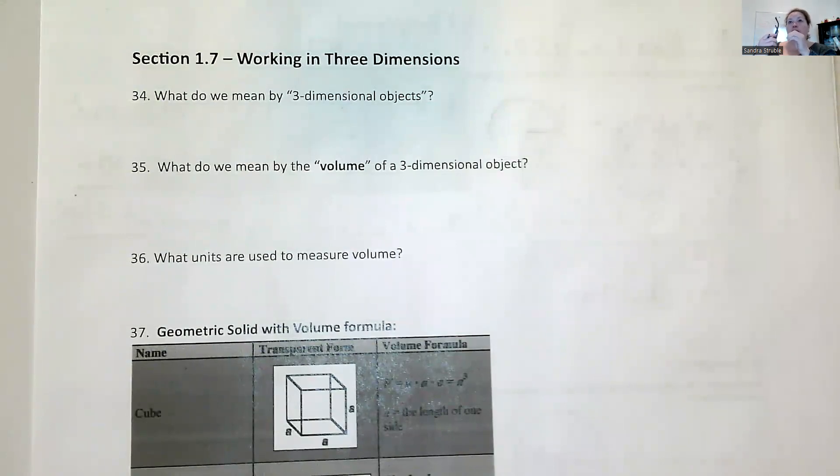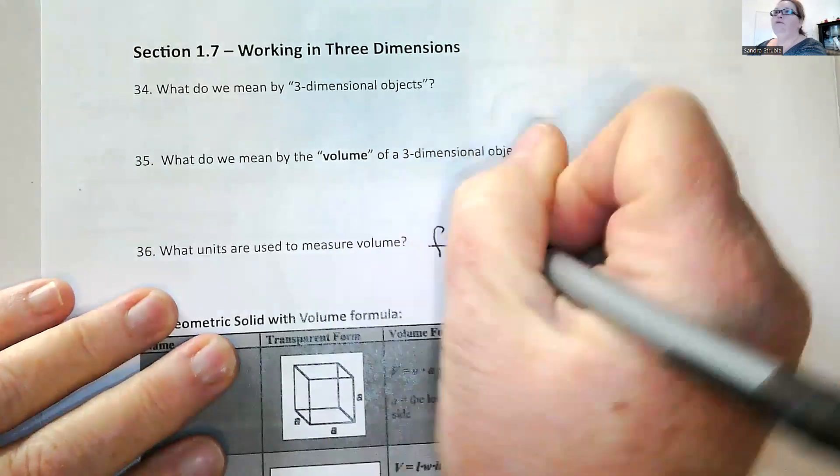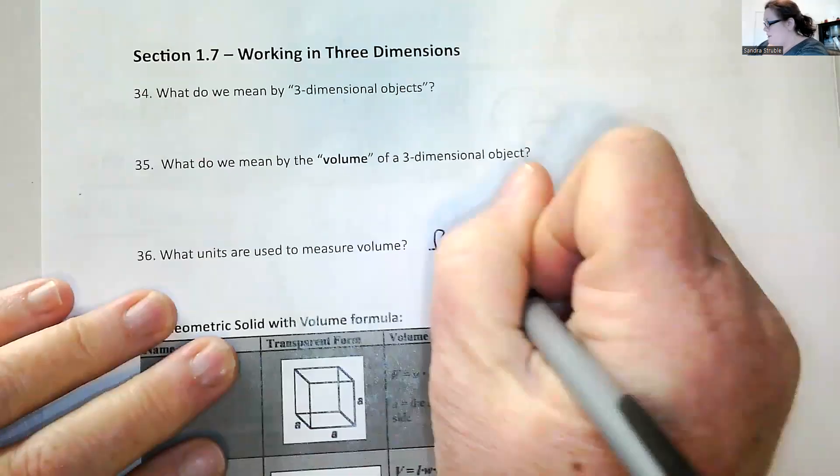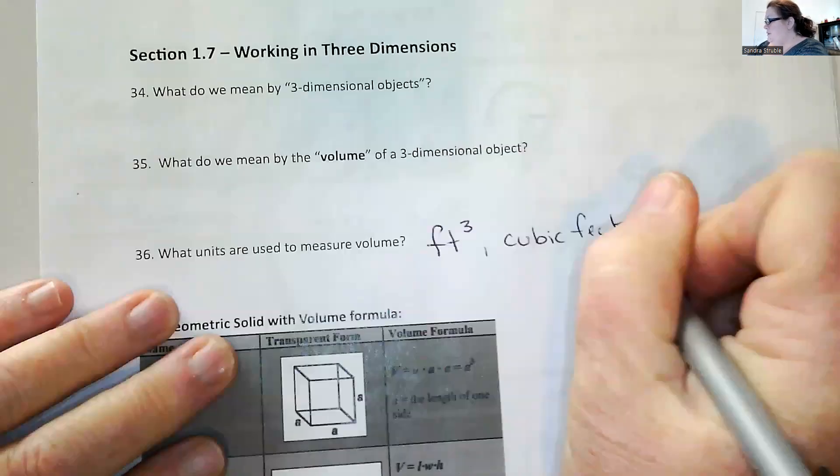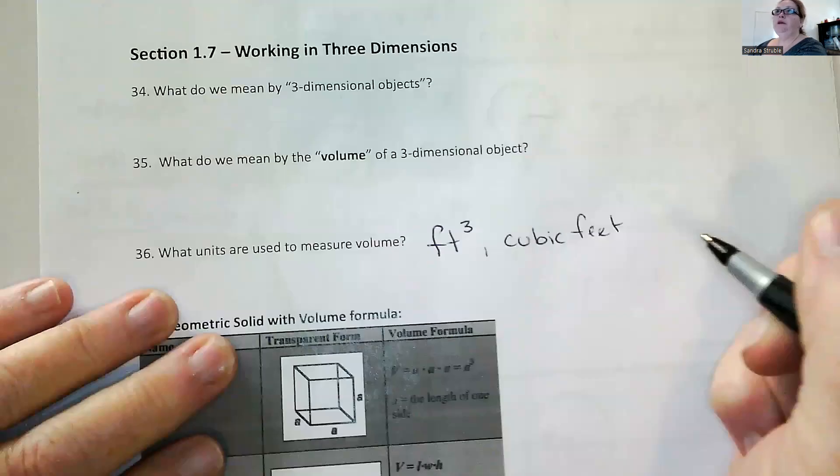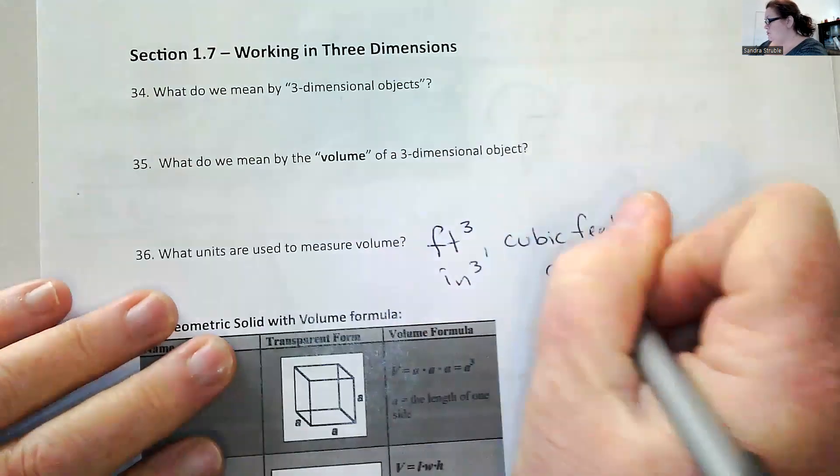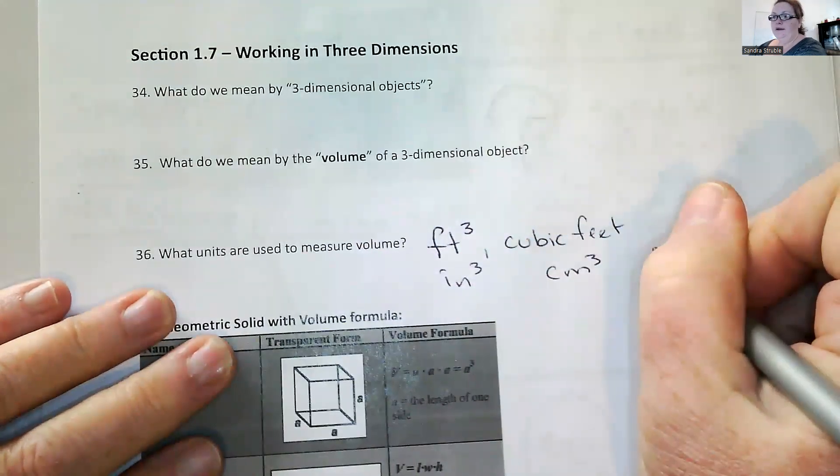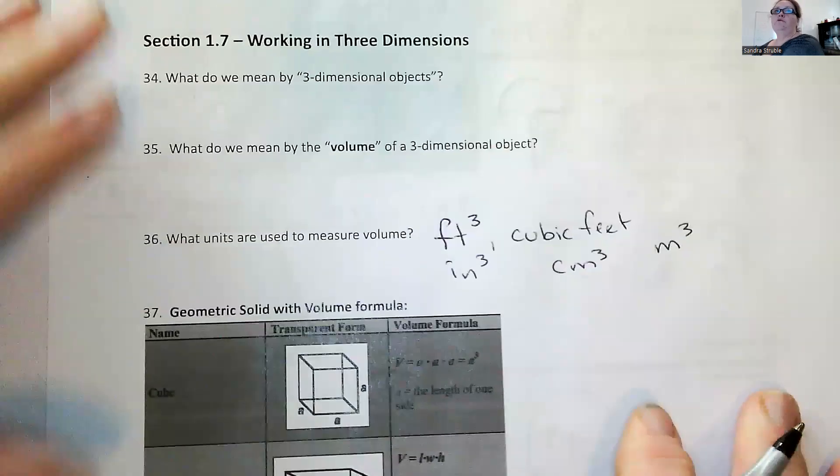But now we're talking about volume. And anytime they're asking about volume or how much something can hold, that answer is always going to be in cubes. It's always going to be cubic. So it could be cubic feet, feet cubed. It could be written either way. It could be inches cubed, centimeters cubed, meters cubed. All of that works for volume. Volume is always measured in cubes.